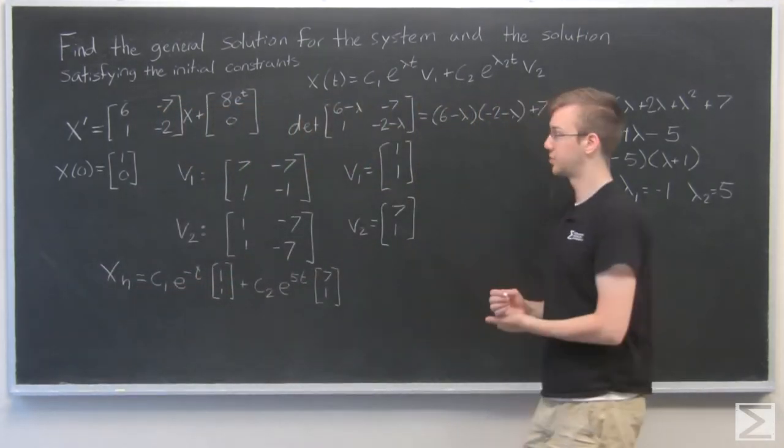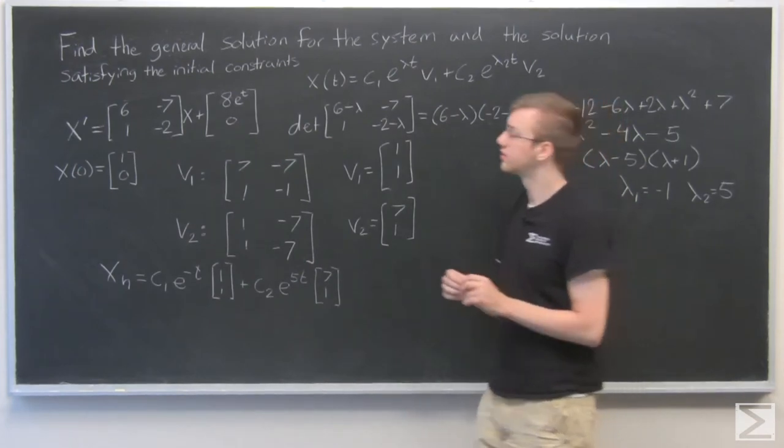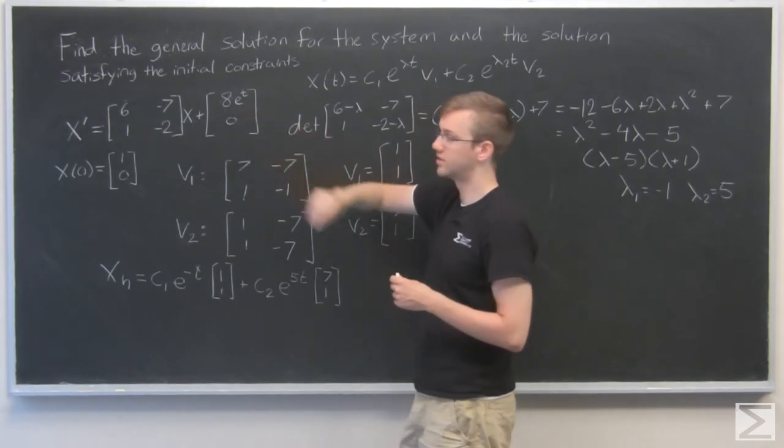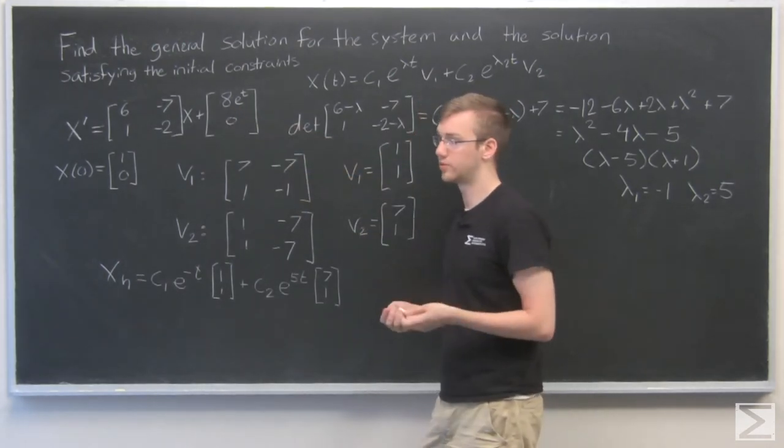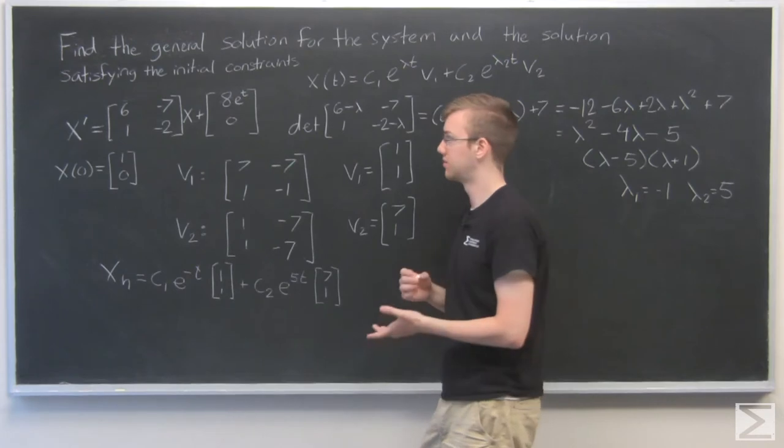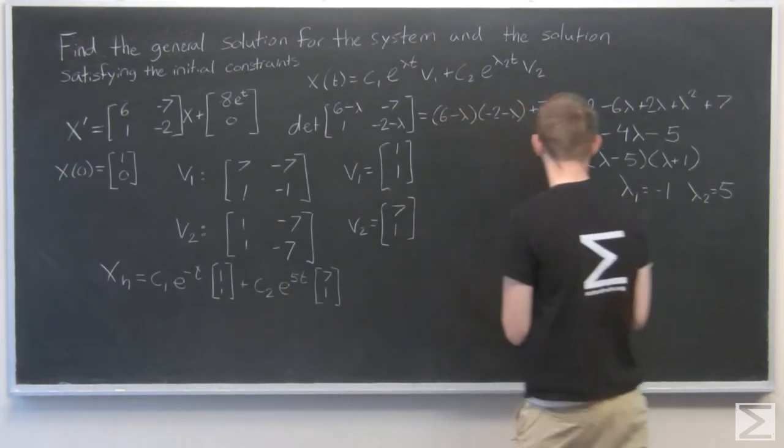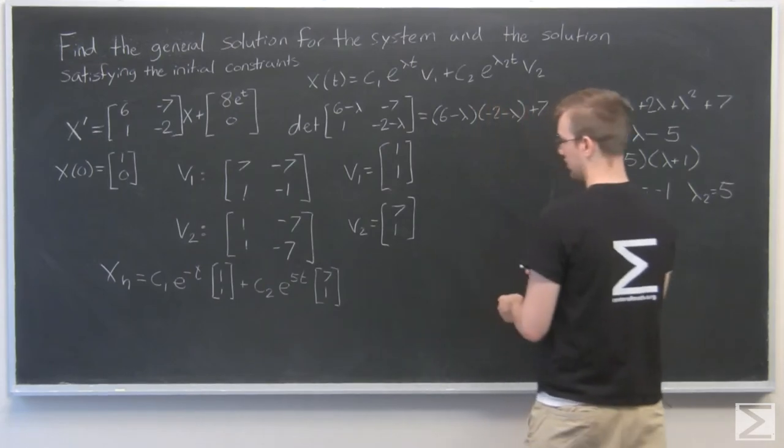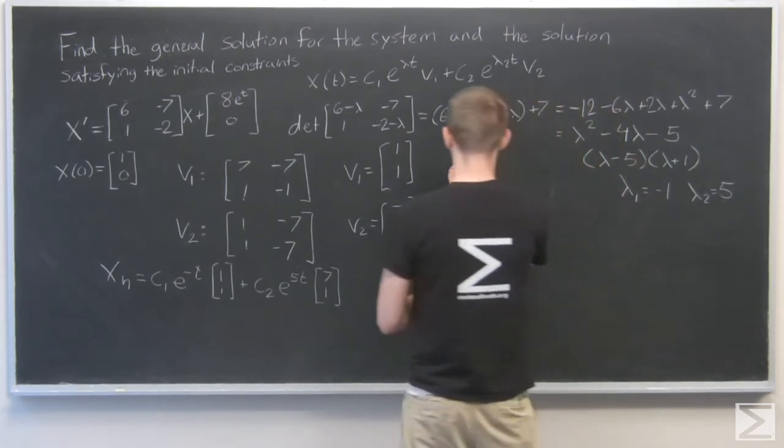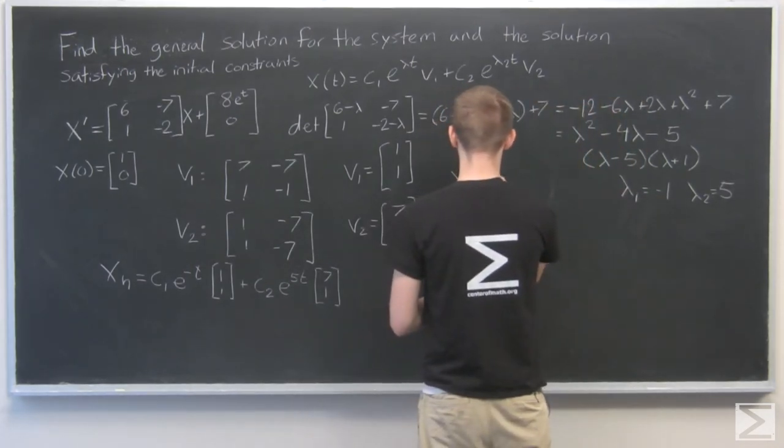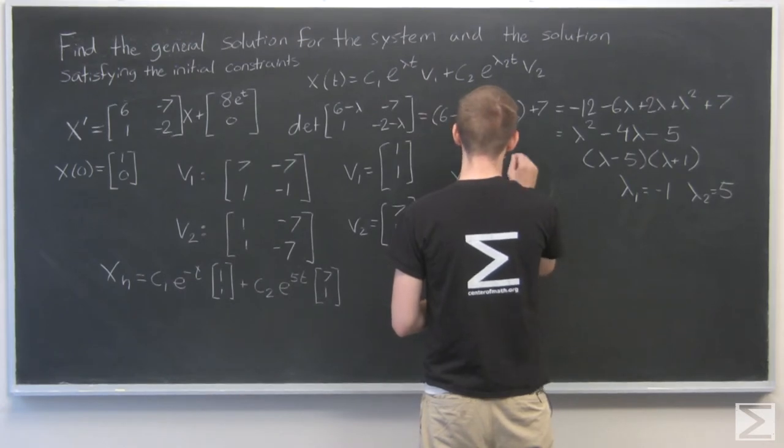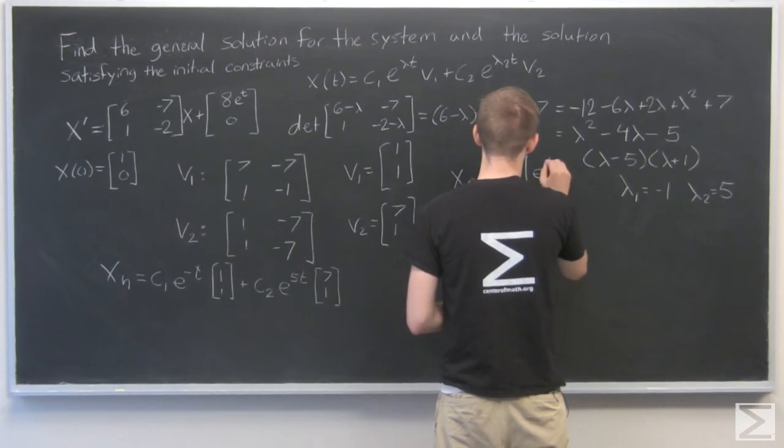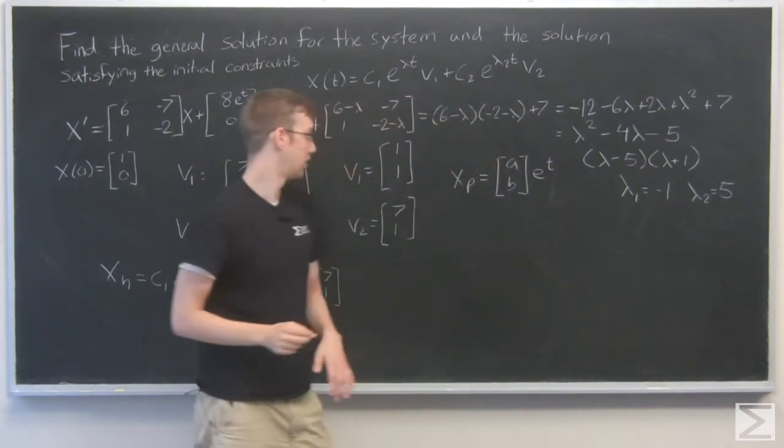Now we need xp. Looking at this, I have a constant here times e^t, so my xp is probably going to be of the form a constant times e^t. I'm going to generalize that and say xp is going to be constants [a, b] times e^t.